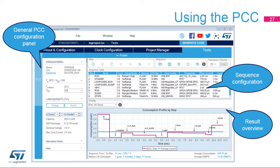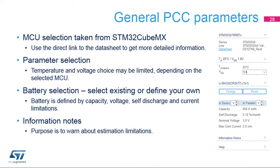The power consumption calculator is the fourth tab in the STM32CubeMX main window. The window is divided into several panes. The general configuration pane summarizes the typical operating conditions and the MCU type currently selected. The second pane displays the simulation sequence and its controls — there is no button to execute the simulation, as the results are available instantaneously. The battery selection pane is used to select or define a battery type; the battery source is optional and, if defined, may be used in only selected sequence steps.